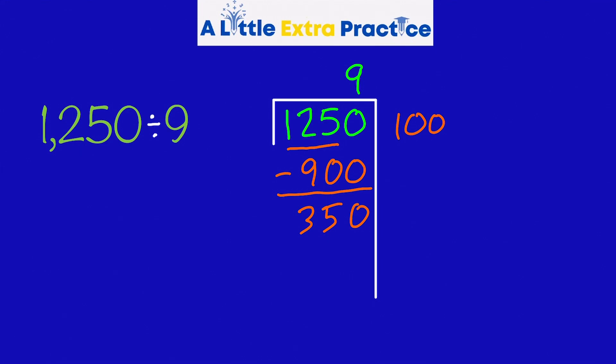9 times what is about 35? 9 times 4 is 36. Too big. 9 times 3 is 27. But it's really a 30. 9 times 30 is 27 with a 0. Subtract. And this becomes an 8.